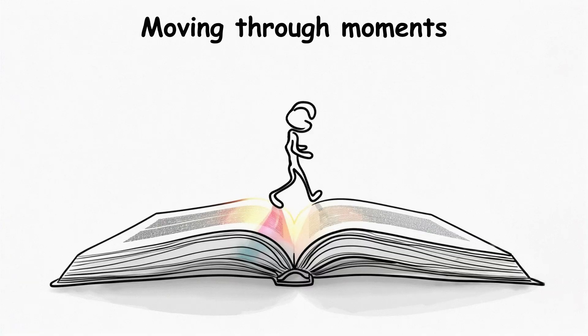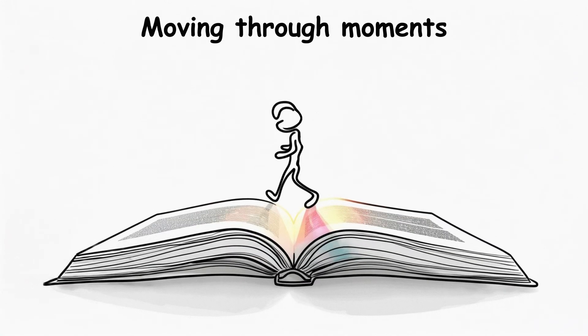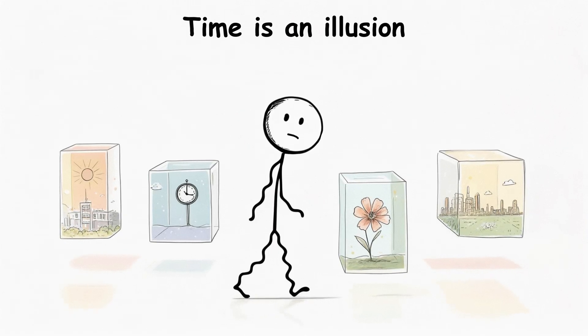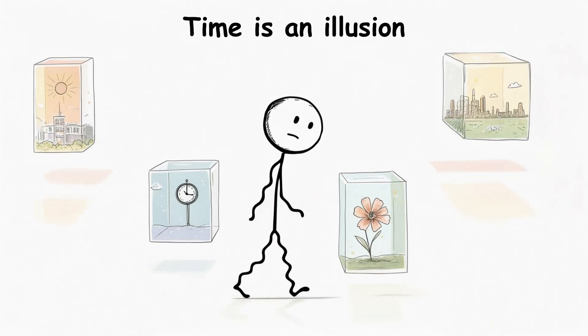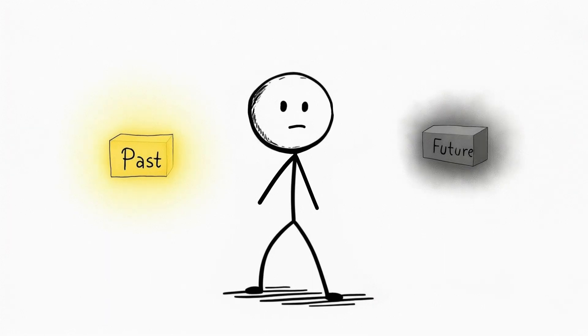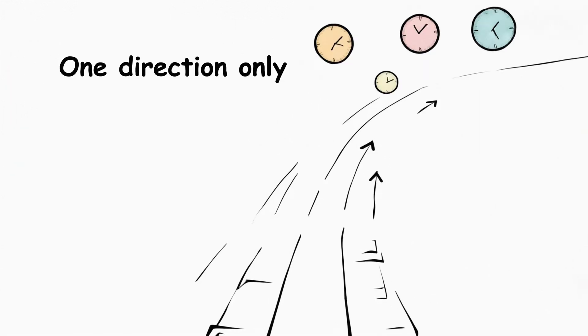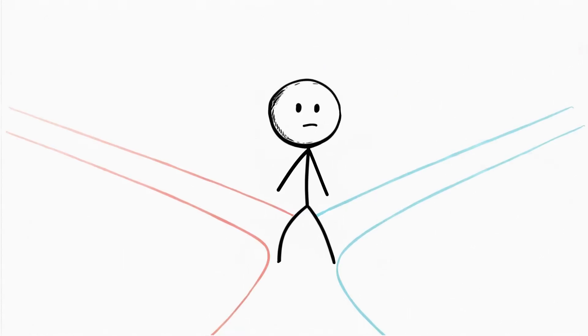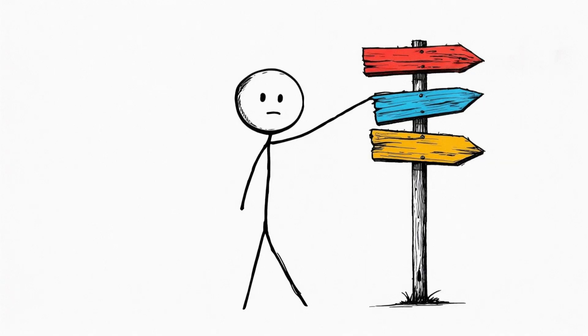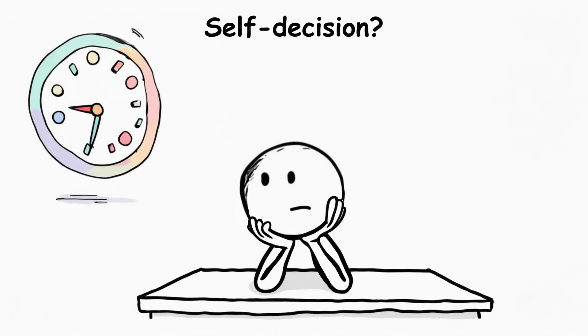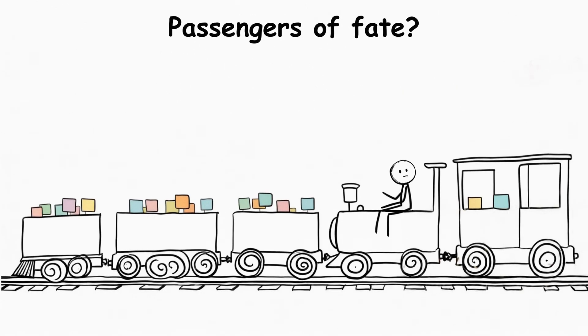We simply move through them, like a reader through a book, or like a beam of light through film. According to this theory, time is the illusion of movement across already existing moments. This explains why we remember the past but do not know the future. Because we are directed only one way. But if everything already exists, then where is free will? Where is choice? Where do I decide for myself? Or are we just passengers on a train moving along predetermined tracks?